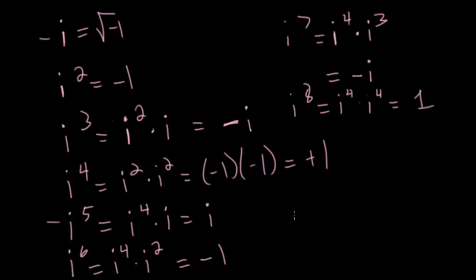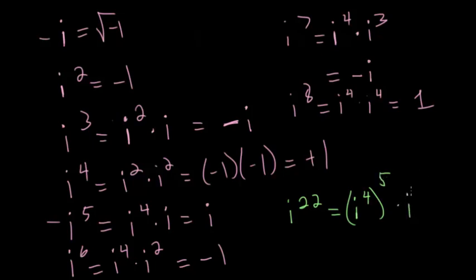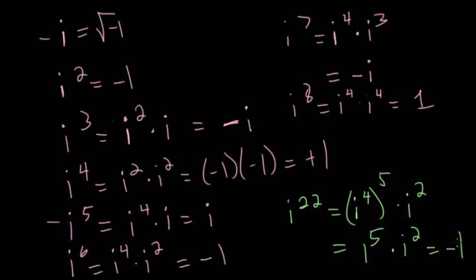If you see a question like i to the 22nd power, first figure out how many multiples of four go into 22. Four goes into 22 five whole times with two left over. So we have i to the fourth, raised to the fifth power, times i squared. i to the fourth is 1, and 1 to the fifth power is 1. So this becomes i squared, which is negative 1. Therefore i to the 22nd is simply negative 1.